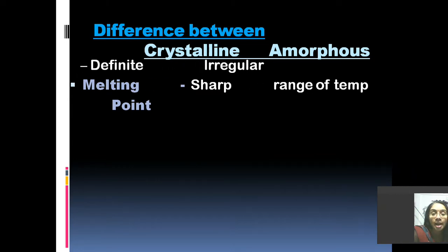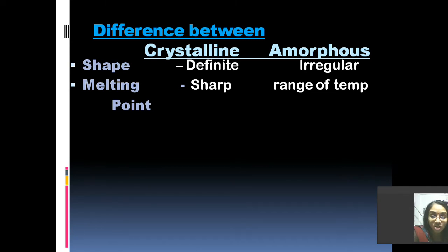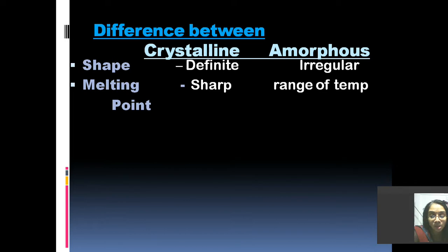The differences between crystalline and amorphous solids: regarding shape, crystalline solids have a definite shape whereas amorphous solids are irregular in shape. Regarding melting point, in crystalline solids we can see a sharp melting temperature — at a particular temperature all the intermolecular forces of attraction between the particles will break and they will separate out to form a liquid. In amorphous solids, this change happens over a range of temperature because the particles are not orderly arranged, so breaking of intermolecular forces does not happen at a single temperature.